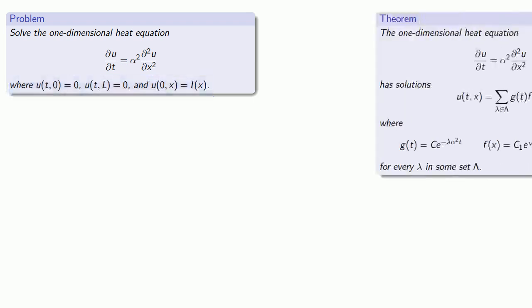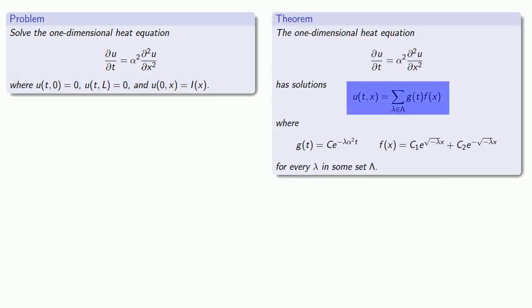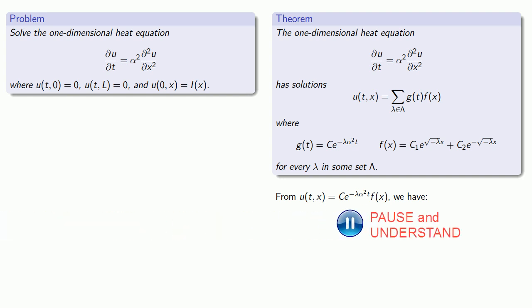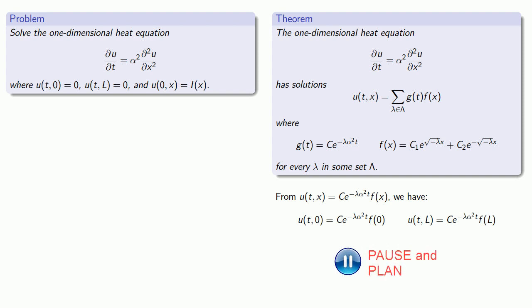To begin with, our theorem tells us that our solutions will be the sum of products of functions. Now our boundary conditions tell us that u of t 0 is 0 and u of t L is 0 as well. So let's consider one of those solutions u of t x equals c e to the power minus lambda alpha squared t f of x. Incorporating those boundary conditions and since we have an exponential function here we can divide by it and so we know that f of 0 is 0 and f of L is 0.